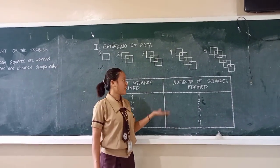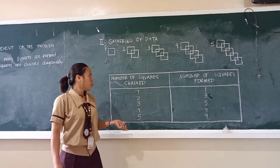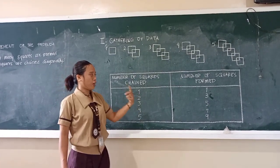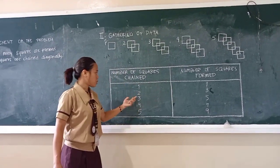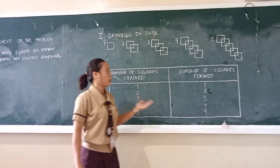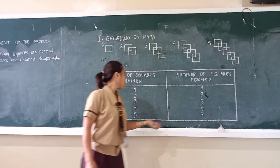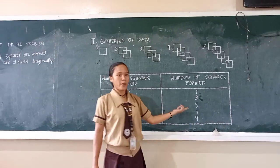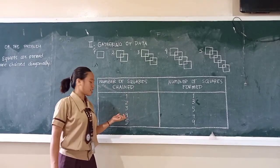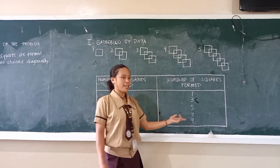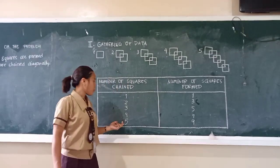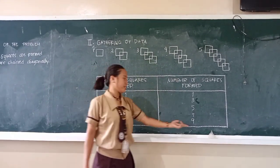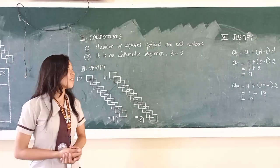The first column represents the number of squares chained. The second column represents the number of squares formed. When one square, it forms one. When two squares are chained, it forms three squares. When three squares are chained, it forms five. When four squares are chained, it forms seven. When five squares are chained, it forms nine.